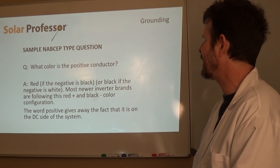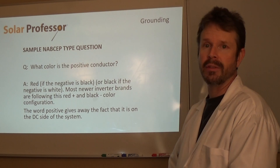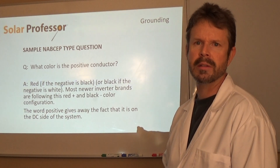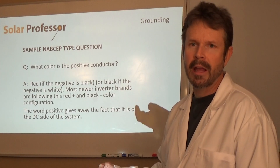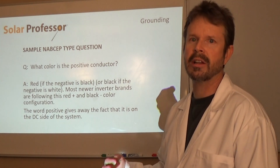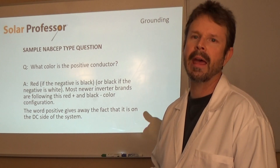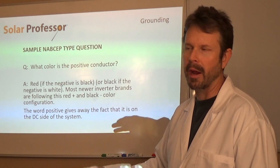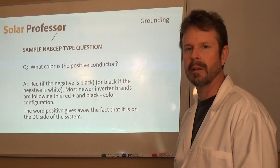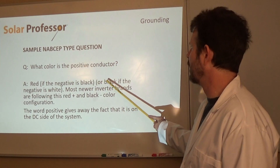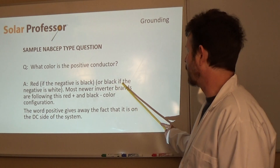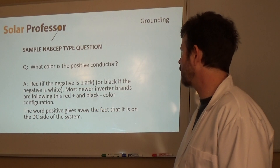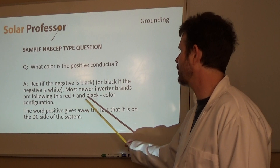Here's a sample NABCEP question: What color is the positive conductor? Well, the answer is red — and it's red if the negative is black. That's kind of like a car, right? Red is positive in a car system and black is negative. And in a car, the black is touching the frame, so that is a grounded conductor — part of the grounding situation in the car, which is the frame. If it's like the picture we just saw where black is positive, then the negative is white. You could end up in a situation with either. Most newer inverter brands are following red for positive and black for negative.